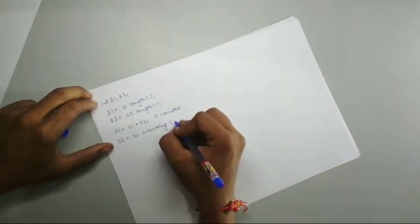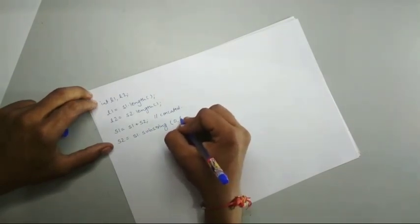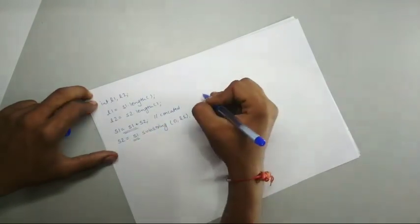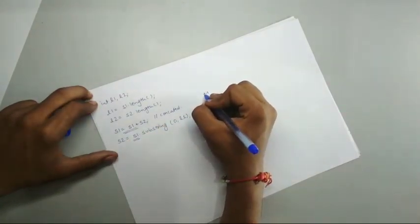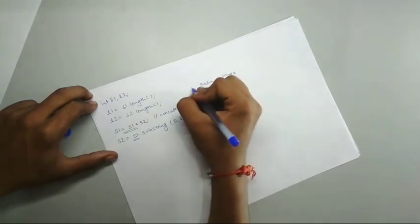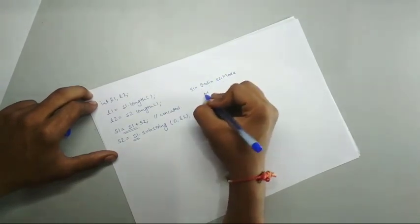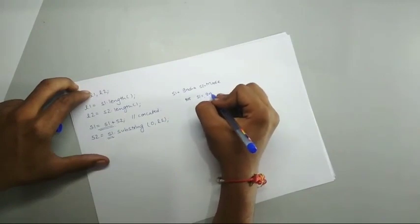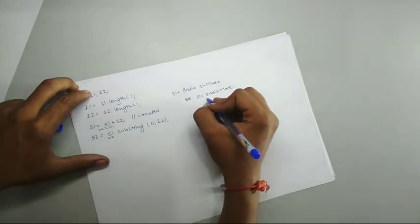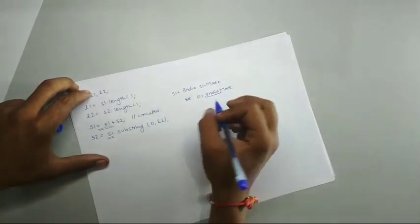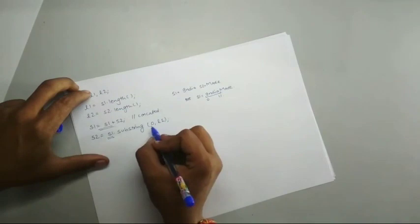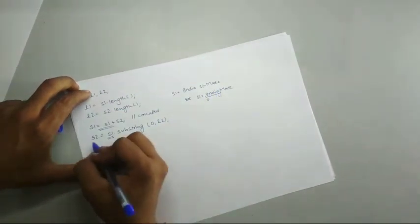And this will be we can say 0 comma l1. That means this s1 is first and second string, that means we can say our string was India and made, this was the s2. So now the new s1 will be equal to India made. So here what we are doing is we are extracting the India, that means from 0 to l1, the l1 was string first length. That means this India will be stored in the string 2.